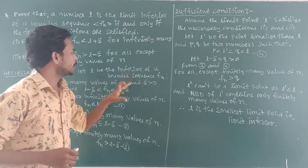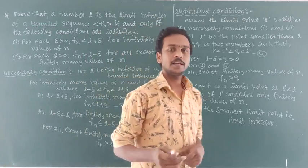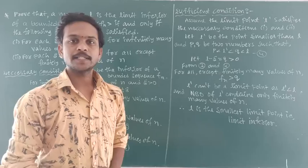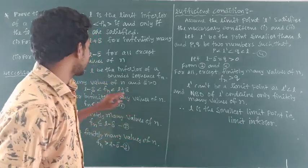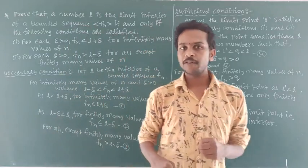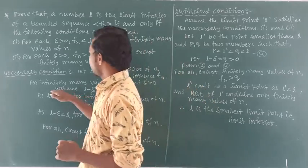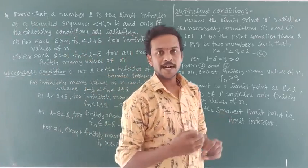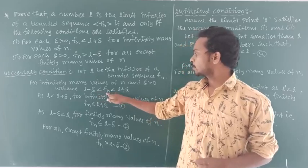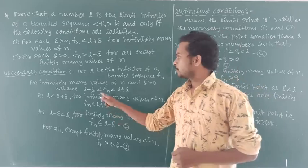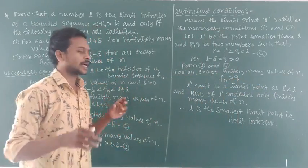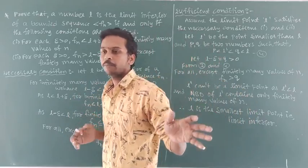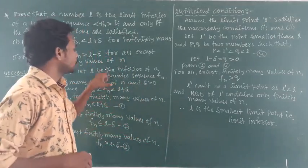The limit inferior of a bounded sequence — a bounded sequence has both a lower bound as well as an upper bound existing. By the definition of neighborhood of a point, for infinitely many values of n and epsilon greater than 0, we have the condition: l minus epsilon is less than fn is less than l plus epsilon. Here, l minus epsilon is the lower bound, l plus epsilon is the upper bound, and fn is the sequence lying between the lower bound and the upper bound — then the sequence is called a bounded sequence.